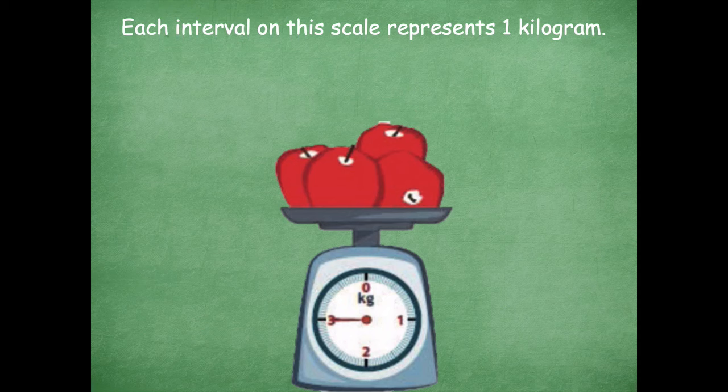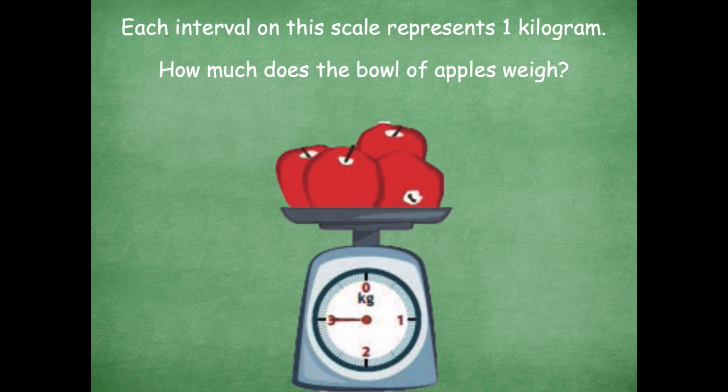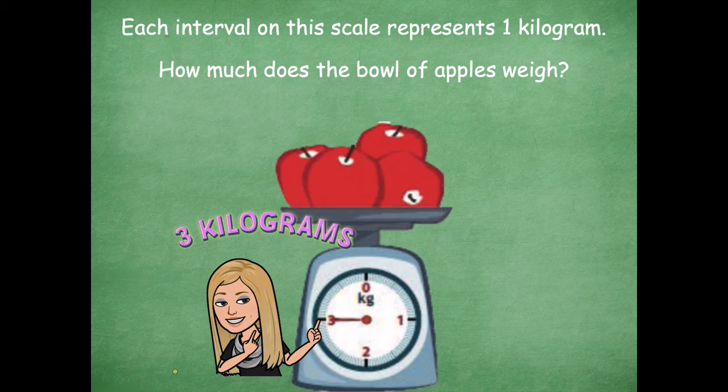From one to two is an interval, and from two to three is another interval. So how much does the bowl of apples weigh? Look at where that arrow is pointing — that red line. You have three kilograms, right? The red arrow is pointing to the three. And we know that the scale is measuring in kilograms, so that tells us it's three kilograms.